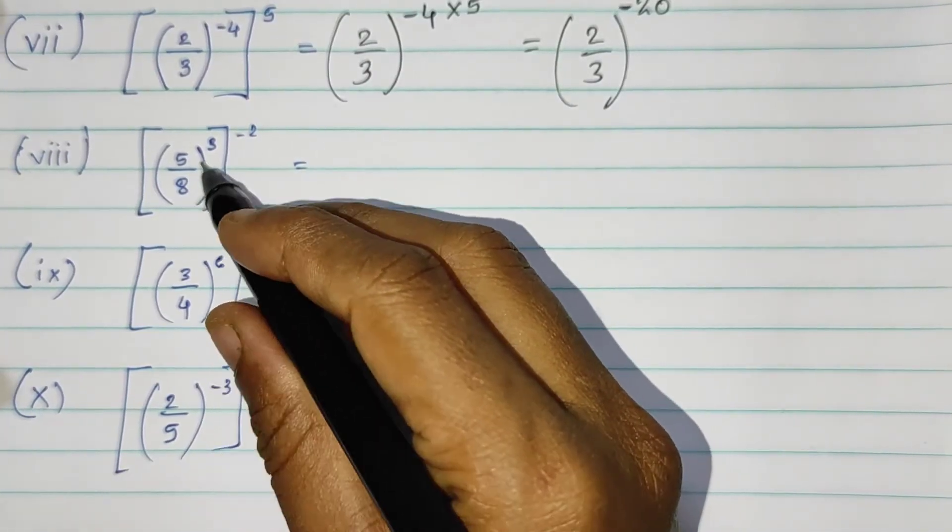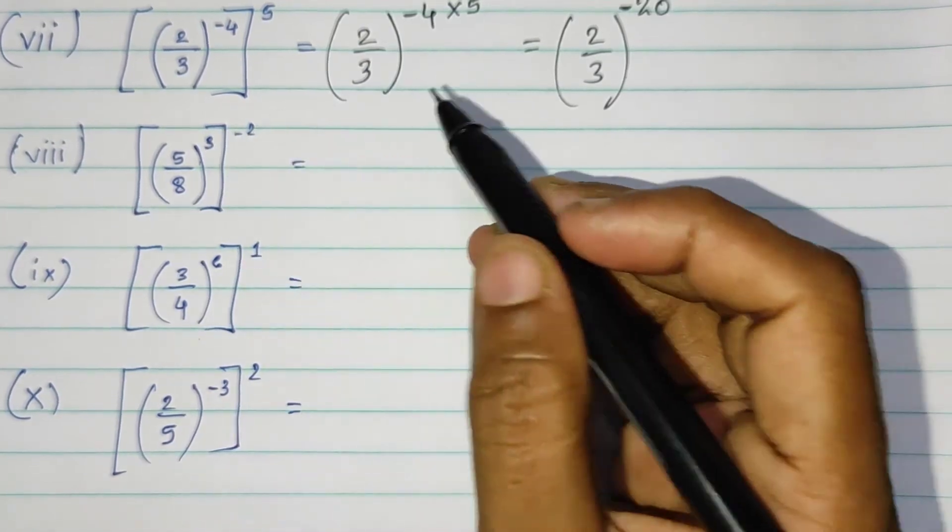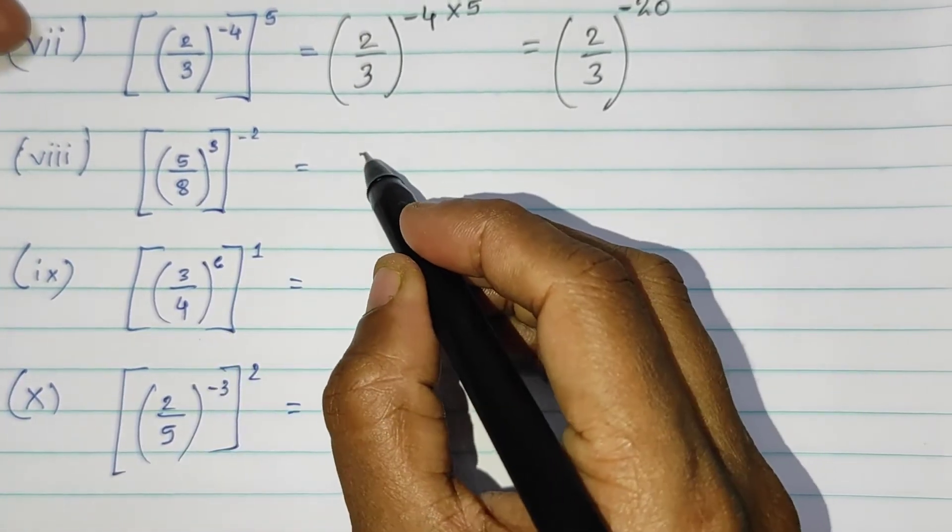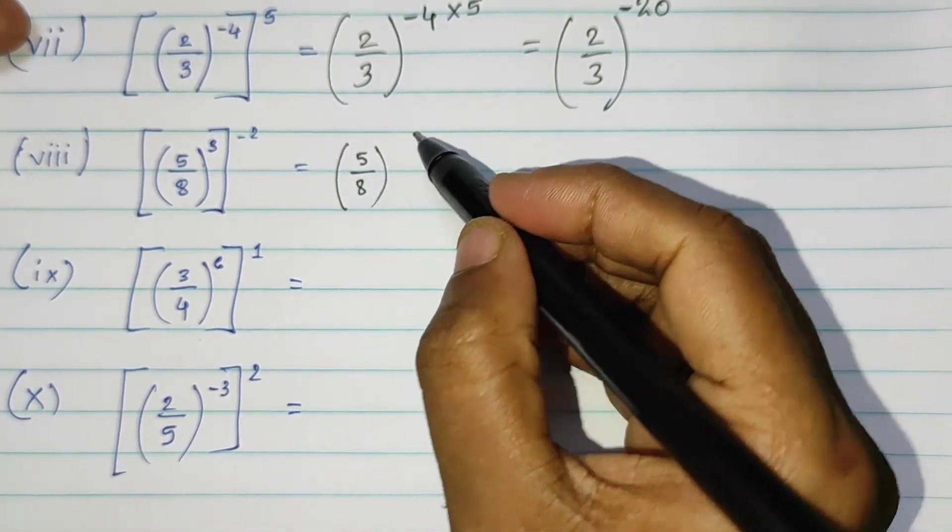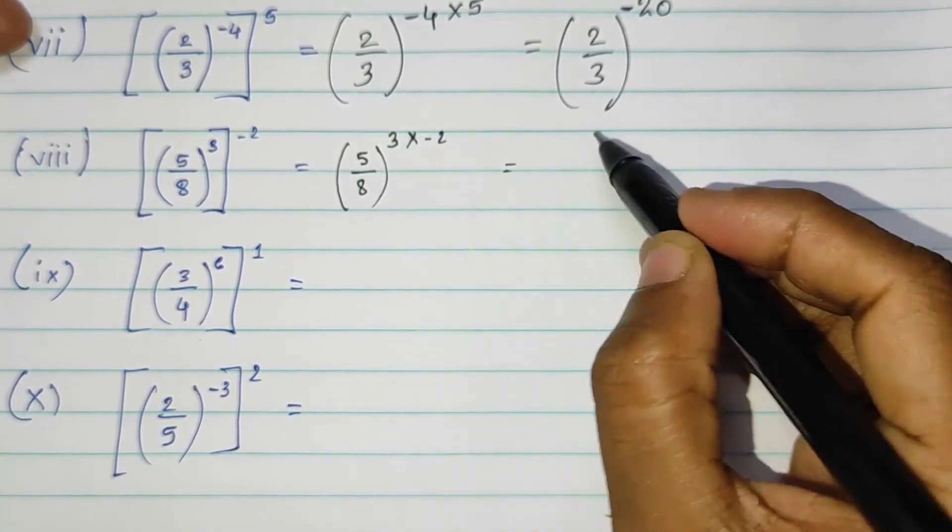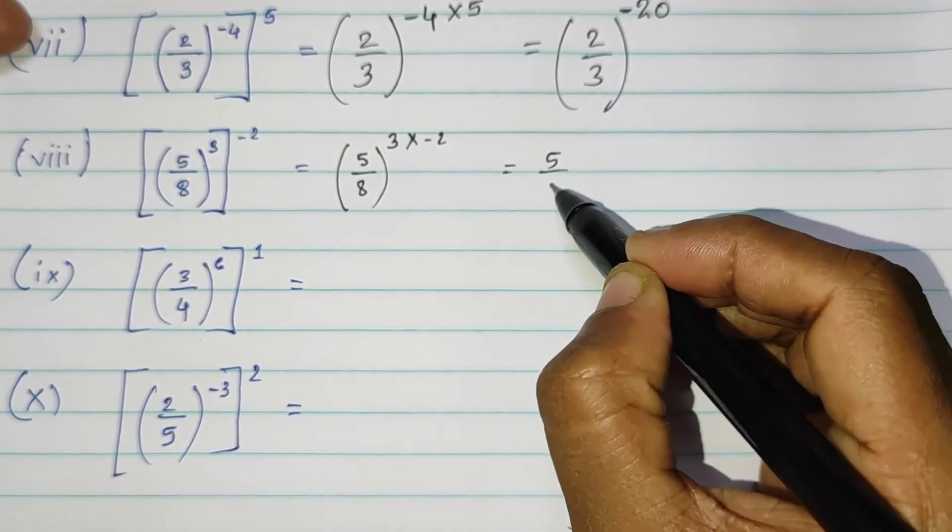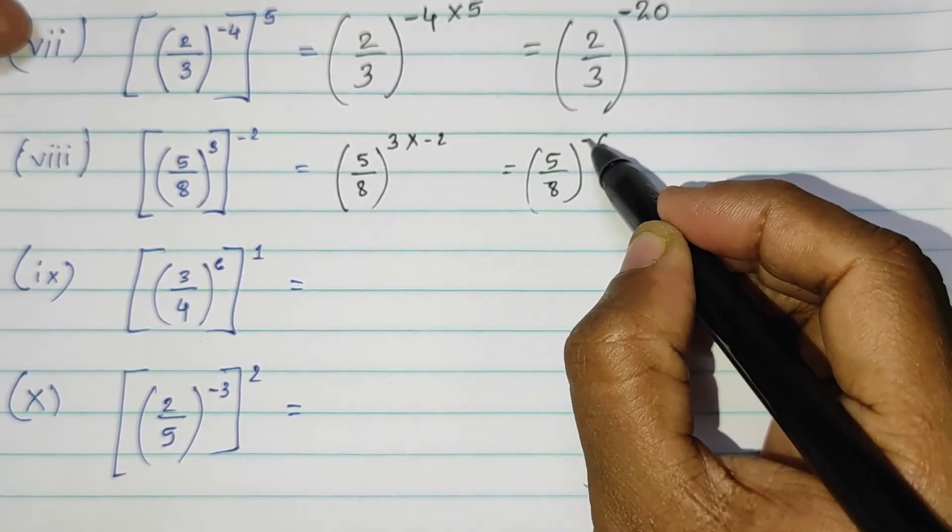Then, the 8th sum. 5 upon 8 raised to 3, the whole raised to minus 2. So 5 upon 8 raised to 3 into minus 2, 5 upon 8, 3 times 2 is 6. Plus into minus is minus.